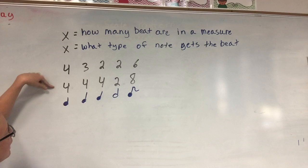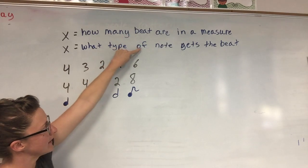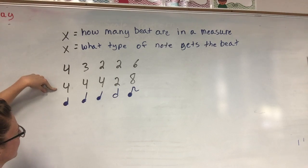So if I have four four time, I have four beats in a measure and the quarter note getting the beat, or there's four quarter notes in every measure, or something that equals four quarter notes in every measure.